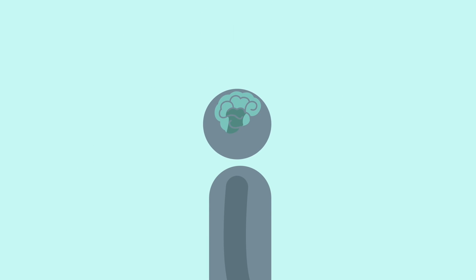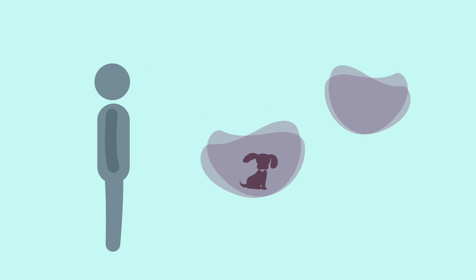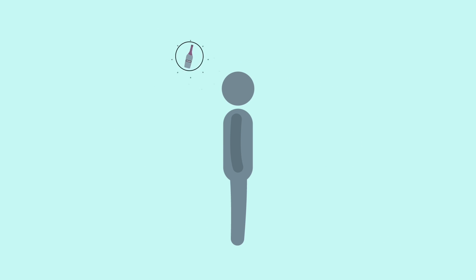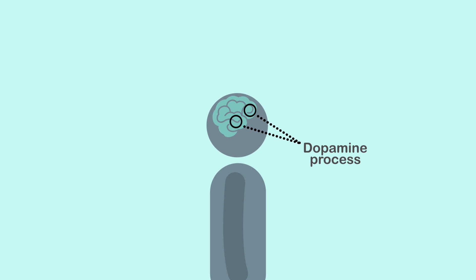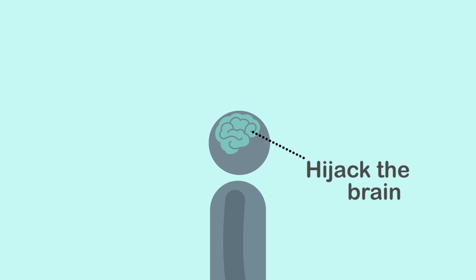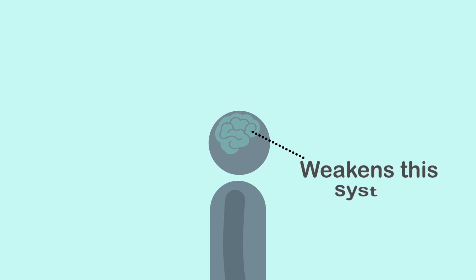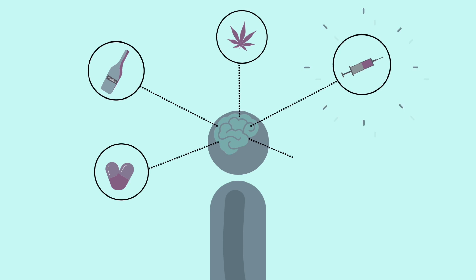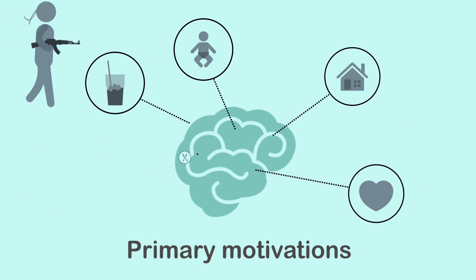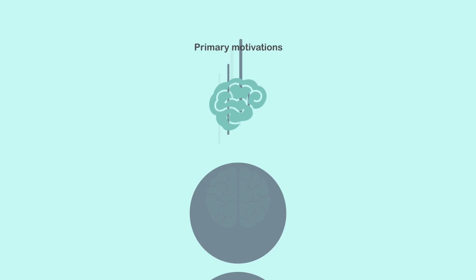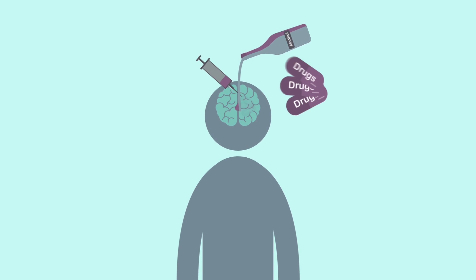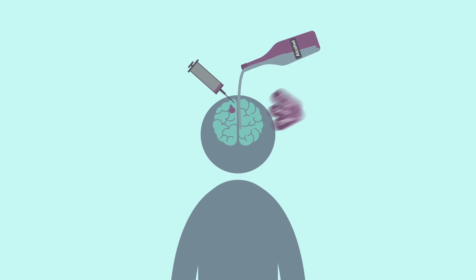Addiction also affects the prefrontal cortex, which is what separates us from other animals. This is where decision-making and impulse control live. When drugs or alcohol are used, they activate the same dopamine process in the survival center, and when use is repeated, that substance can hijack that part of the brain. This hijacker changes the brain and weakens the system to make it believe that the primary need for survival is the drug. In hijacking the brain, it can usurp those primary motivations—food, water, shelter, sex, and protecting our young. And the hijacker needs more and more of the substance to activate the same level of reward or feeling of pleasure, causing the brain tissue to become increasingly damaged with continued drug use.